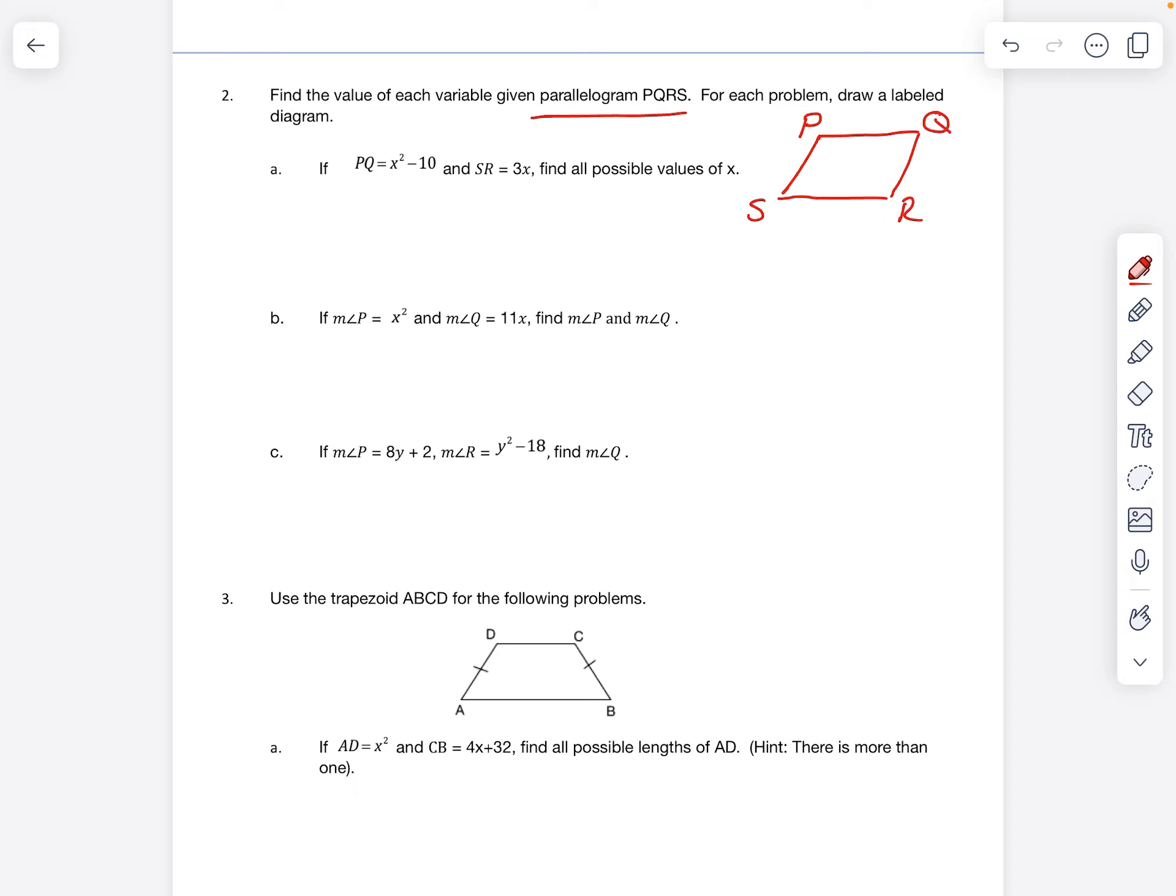And let's label your picture. So PQ is x squared minus 10, and then SR is 3x. These are opposite sides of a parallelogram, so we know that they're going to be equal.